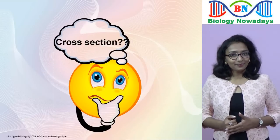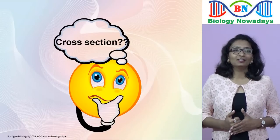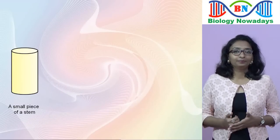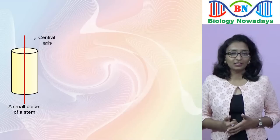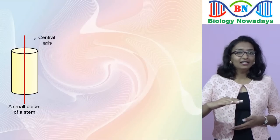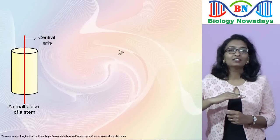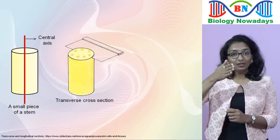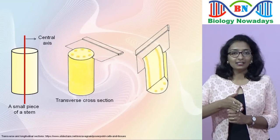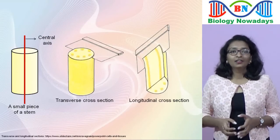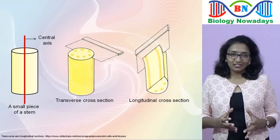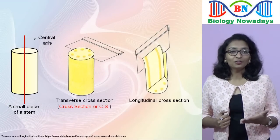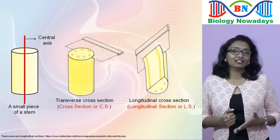Do you know what a cross section is? Let us learn about two common kinds of cross sections. Consider a plant organ, for example a stem, lying at the central axis. When we slice in any plane perpendicular to the central axis of the stem, we get a transverse cross section. But if we cut the stem by any vertical plane passing through the central axis, we get a longitudinal cross section. In botany, when you see the term cross section — short form CS — it actually refers to the transverse section, and longitudinal cross sections are referred to as longitudinal sections or LS.